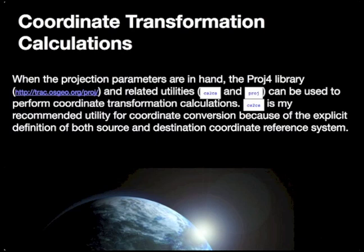When you have the projection parameters for both the source and destination coordinate systems, you can use the utilities installed as part of the PROJ4 library to perform the transformation calculations. The two primary utilities are PROJ and CS2CS. I recommend CS2CS as your initial utility, as it provides a more explicit model for defining the transformation and is easier to understand conceptually.